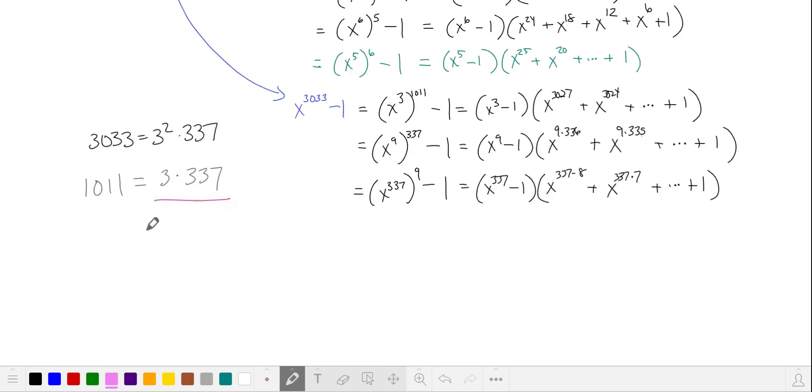Since 9 is not a factor of 1011, we can't write x to the 1011 minus 1 in these two ways. So here we could potentially find some factors.